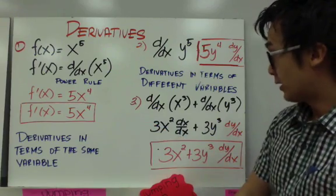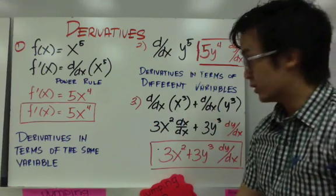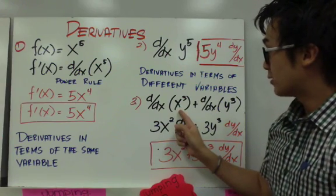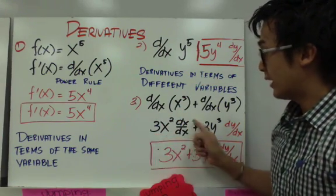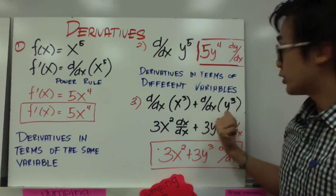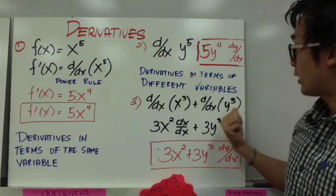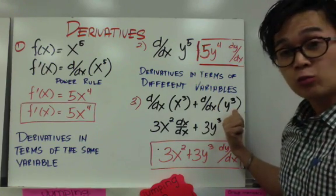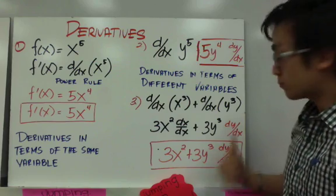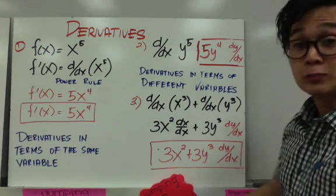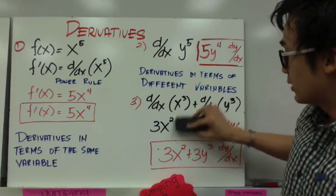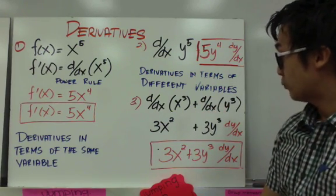Dito sa third example, kung makikita nyo, meron tayong dalawang terms: meron tayong x³ at meron tayong y³, at kailangan natin kunin yung derivative ng bawat isa. Derivative ng x³ in terms of x is going to be 3x² dx/dx kasi kinuha natin yung derivative ng x in terms of the same variable. Dito naman sa pangalawang term, we're trying to take the derivative of y³ in terms of x. Obviously, hindi naman siya x — y siya. So, gamitan nyo lang siya ng power rule, magiging 3y², pero isusulat nyo yung dy/dx to indicate na kinuha mo yung derivative nitong function in terms of x. Final answer natin, since dx/dx hindi na natin sinusulat, simplify it further: 3x² + 3y² dy/dx.